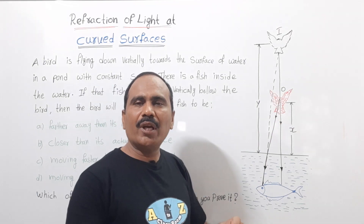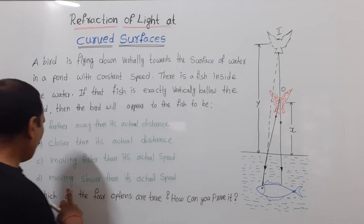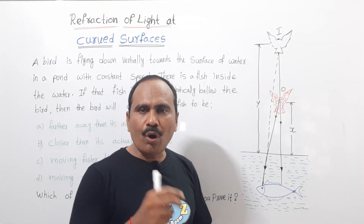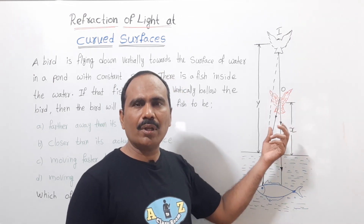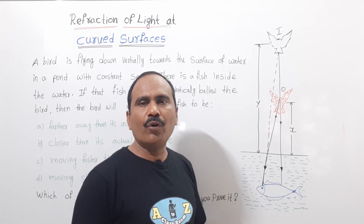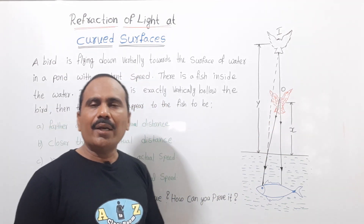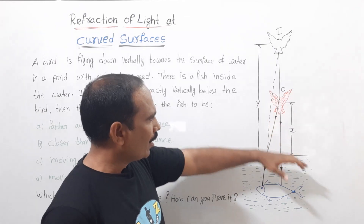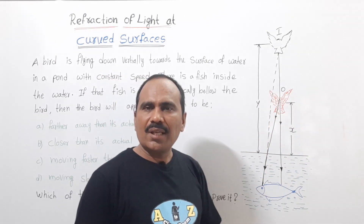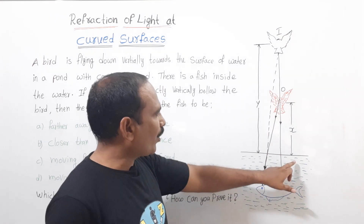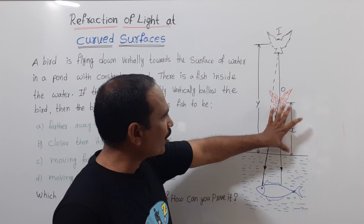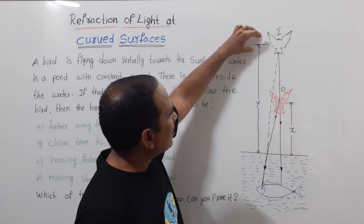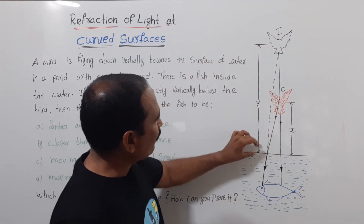The fourth option is moving slower than its actual speed. Now, the actual position of the bird is at distance x from the surface of the water. The surface of the water is working like a plane surface, and the image of the object is forming at distance y from the surface.